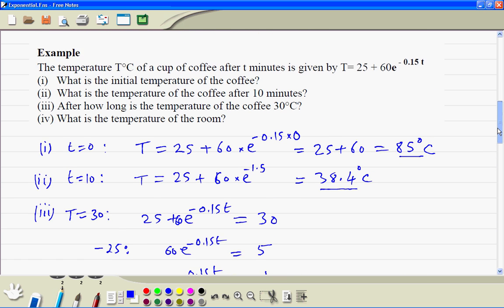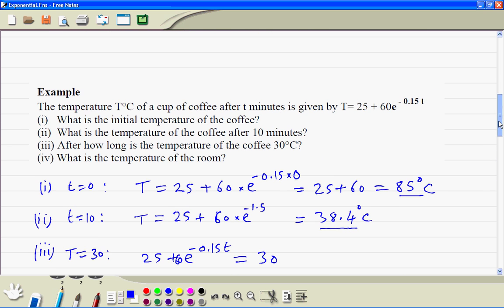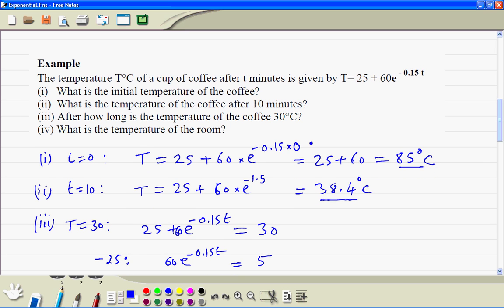Answer to part 4: As the time gets larger and larger, this part of the equation is becoming close to 0. So therefore in the long run, the temperature of this coffee would be the room temperature, which is 25. So the answer to this question is 25 degrees centigrade.